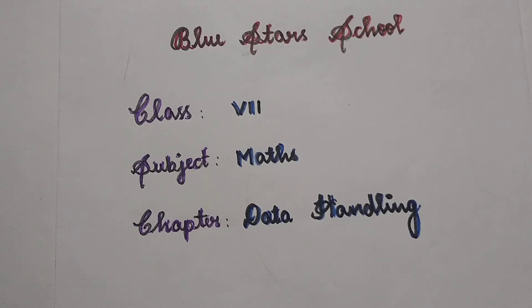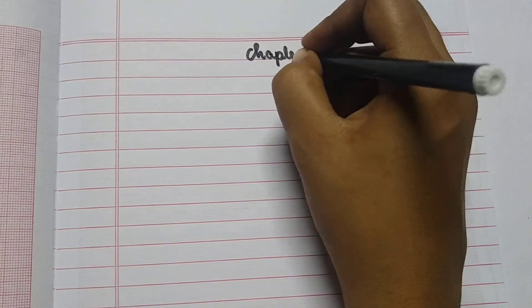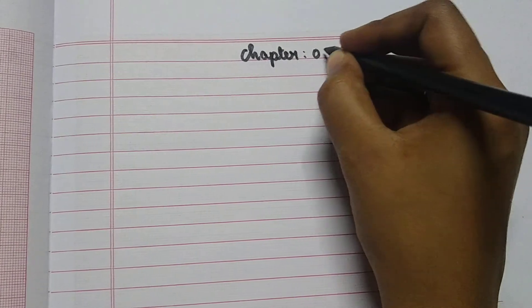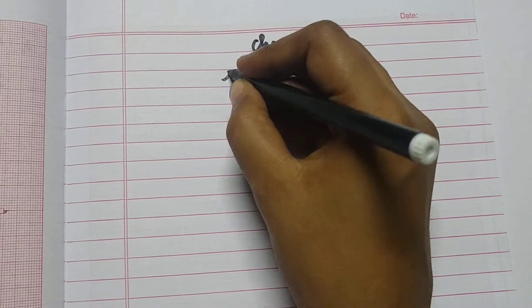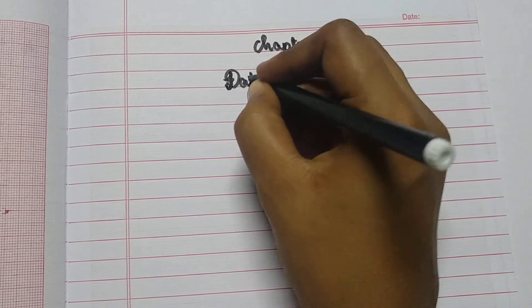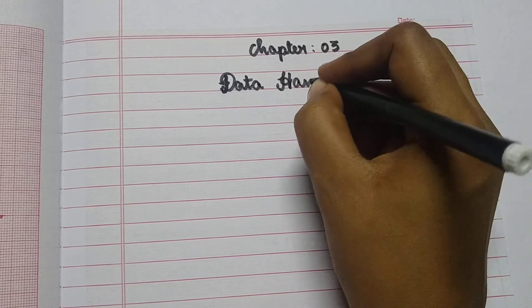Take your graph notebook. Take a new page. Write chapter number 3: Data Handling.